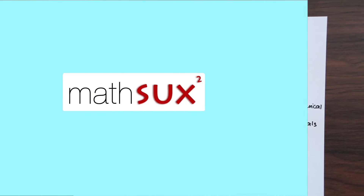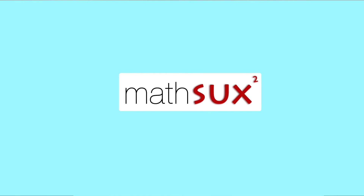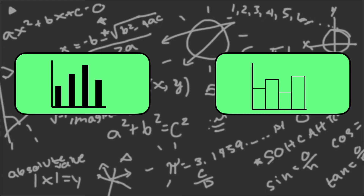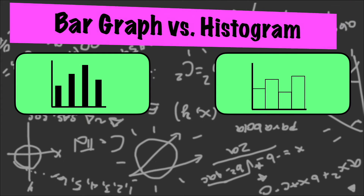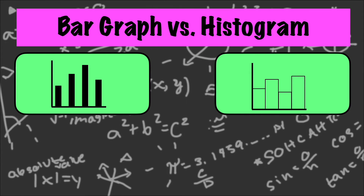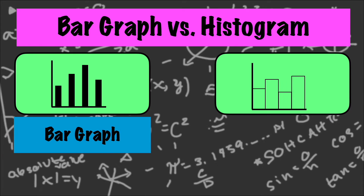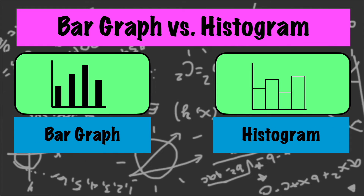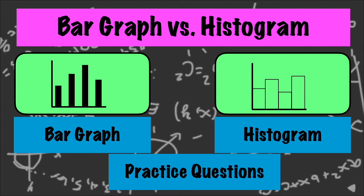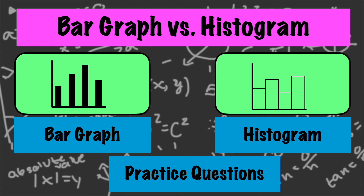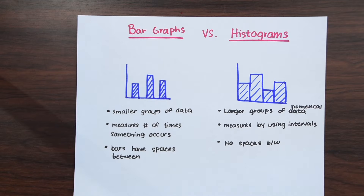Hi everyone and welcome to Math Sucks. This video is going to help you pass statistics. In this video we're going to go over the difference between a bar graph and a histogram — first creating a bar graph given a set of data, and then we're going to create a histogram with the same exact set of data. There will be examples at the end of this video that you can try on your own. So let's dive right into it.